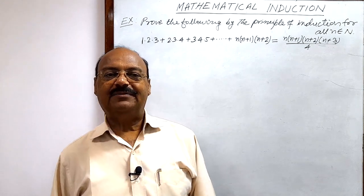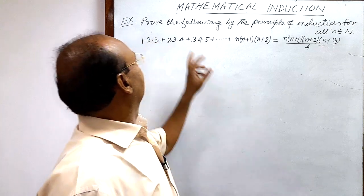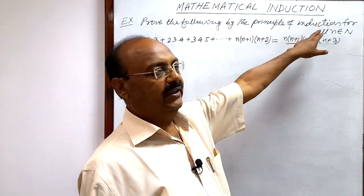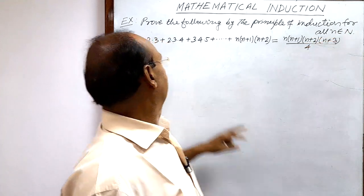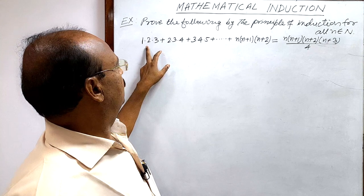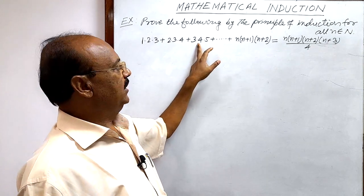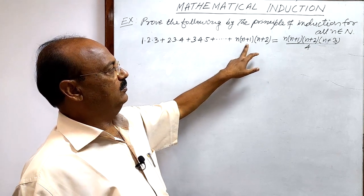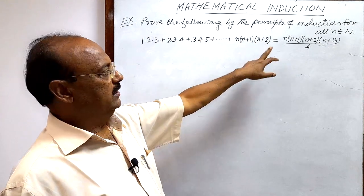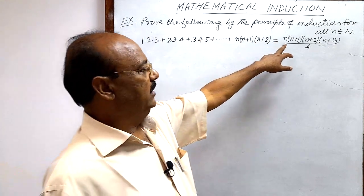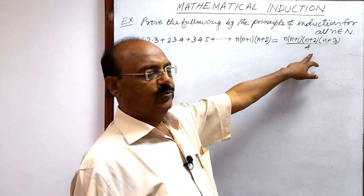Here, let us see a question from the chapter Principle of Mathematical Induction. The question is: prove the following by the principle of induction for all n belonging to the set of natural numbers N. The statement is 1·2·3 + 2·3·4 + 3·4·5 + ... + n(n+1)(n+2) = n(n+1)(n+2)(n+3) / 4.